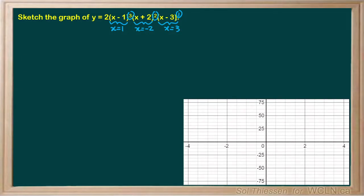The odd multiplicity roots at 1 and 3 will see the plot cross through the x-axis at those roots. At x equals 1, we expect the plot to cross through the axis — I'll draw a vertical tick to indicate that. At x equals 3, we expect to see the same thing, so I'll draw another vertical tick. At x equals negative 2, we have an even multiplicity of 2, so we expect the plot to bounce off the axis. I'll draw a horizontal line there to show that the plot will not cross through the x-axis at that point.